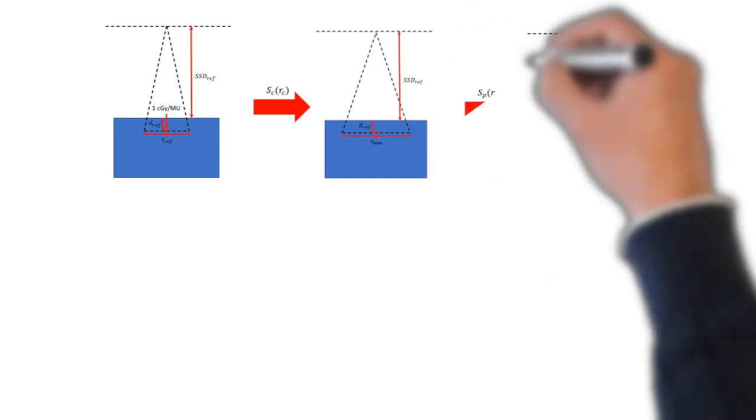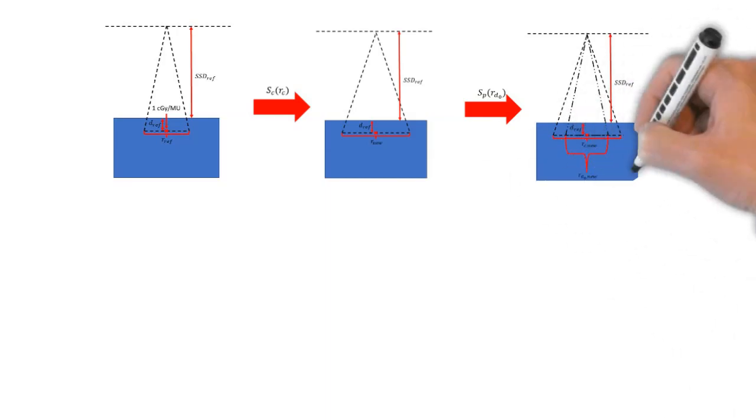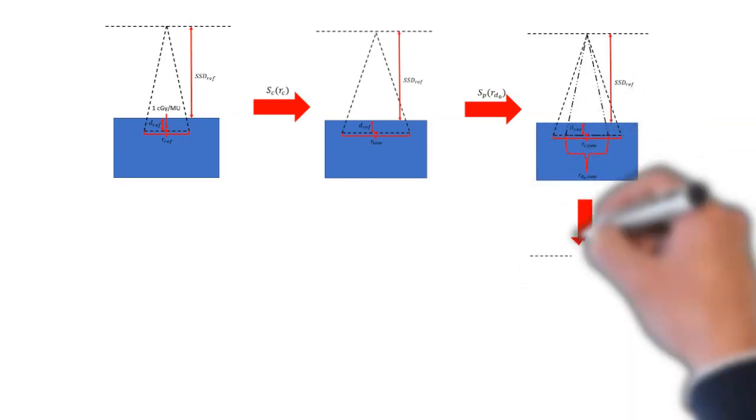And next, when we apply a phantom scatter factor, we are applying a tertiary block if we have a tertiary block, and we are accounting for the different level of the phantom that is irradiated compared to the reference field. And if there is no tertiary blocking here, we would just use the collimator field size.